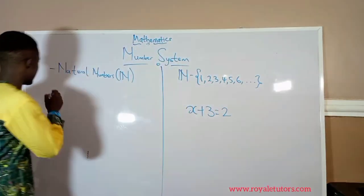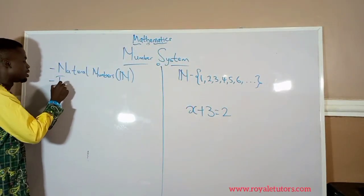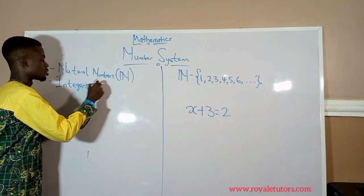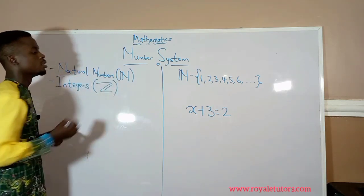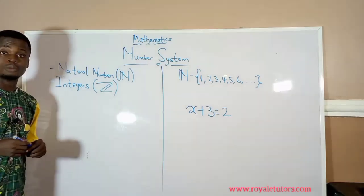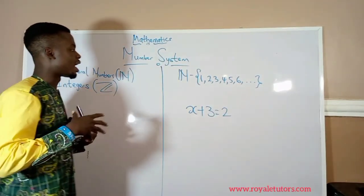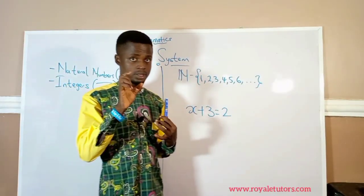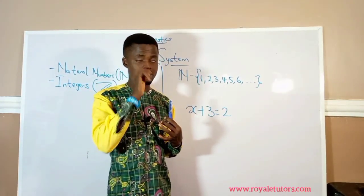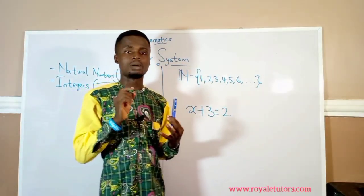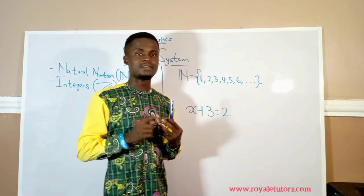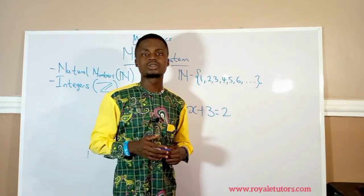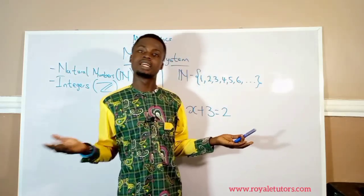They called this new number system integers. Integers are numbers that are positive whole numbers — whole numbers means they are not decimals and not fractions. Integers include positive numbers, negative numbers, and zero. Zero is considered a neutral number — we do not consider zero to be a positive number or a negative number.